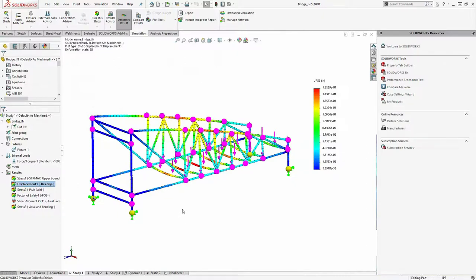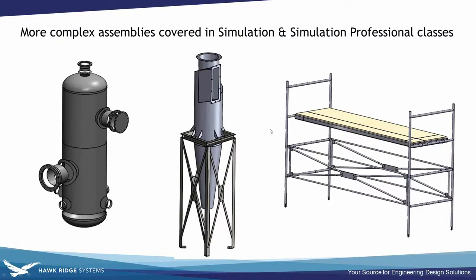These simplification methods - shells and beams - are covered in our training course for more complex assemblies. We start simple and progress to things like pressure vessels or systems with wide thin parts and beams combined. For sheet metal, it automatically converts to shell mesh; for weldments, automatically converts to beams. That's another benefit of the integration with SOLIDWORKS - it recognizes the intelligence from sheet metal or weldment parts and converts them to the right body type for simulation.